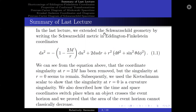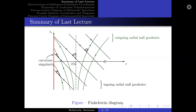In the last lecture, we extended the Schwarzschild geometry by writing the Schwarzschild metric in Eddington-Finkelstein coordinates. We can see from the equation above that the coordinate singularity at r equals 2m has been removed, but the singularity at r equals 0 seems to remain. Subsequently, we used the Kruskal-Szekeres approach to show that the singularity at r equals 0 is a curvature singularity. We also described how time and space coordinates switch place when an object crosses the event horizon, and proved that the area of an event horizon cannot classically decrease. In addition, we also learned how to draw Finkelstein diagrams.